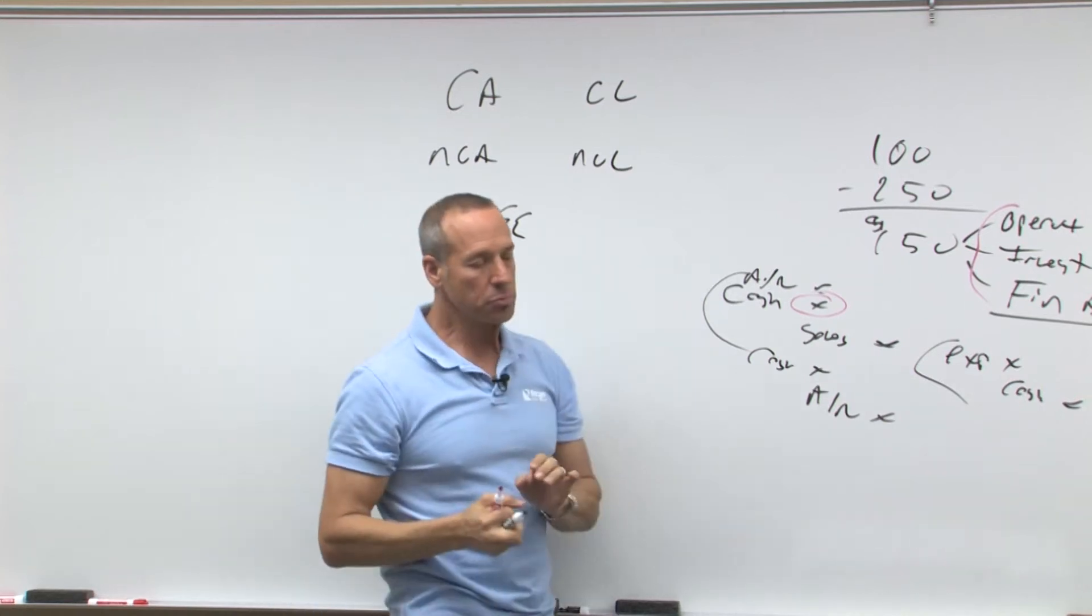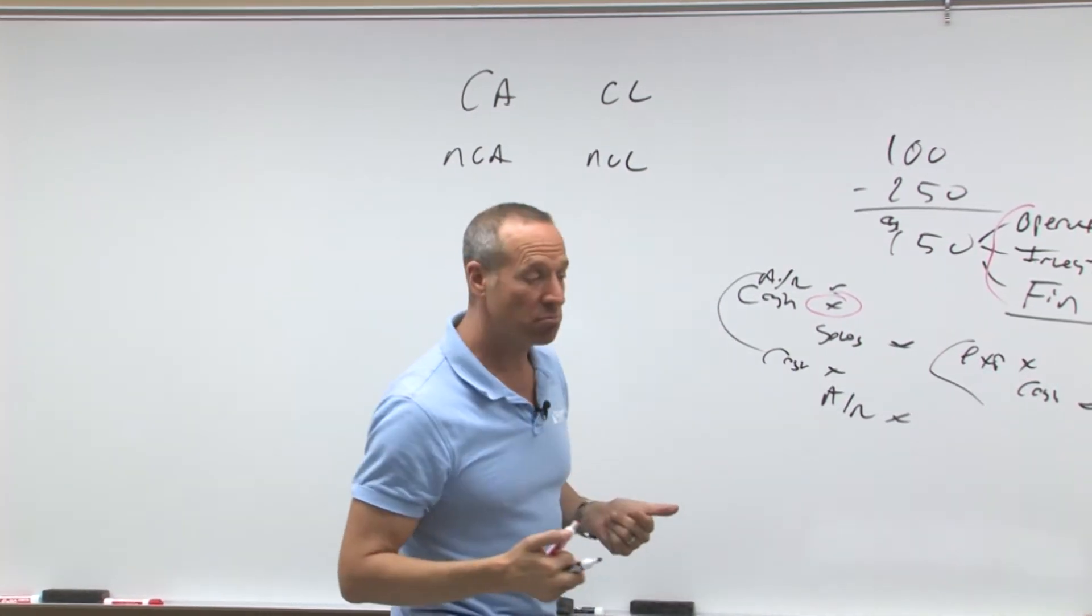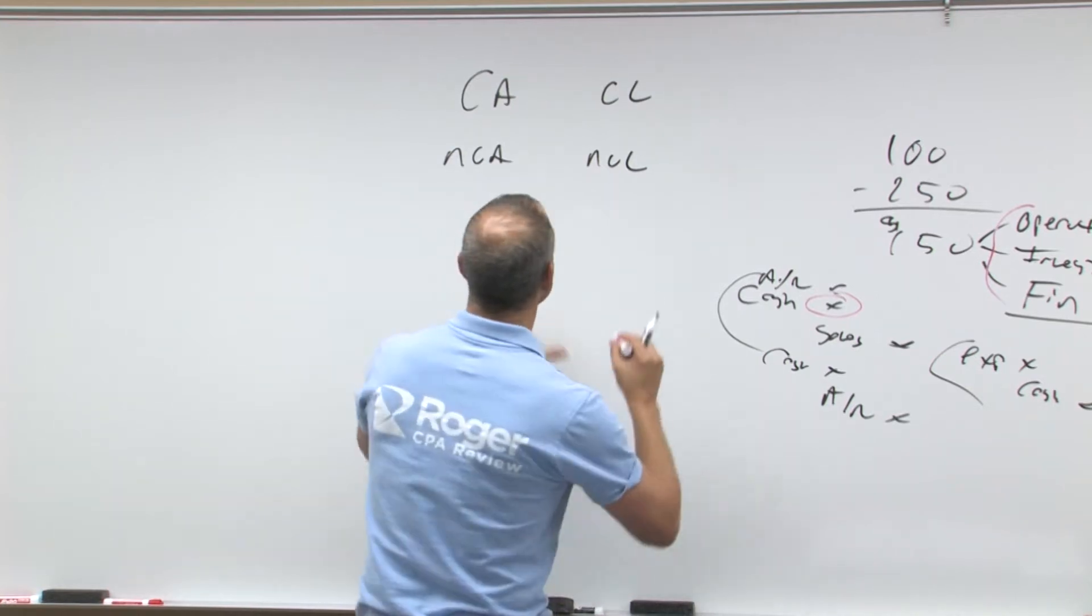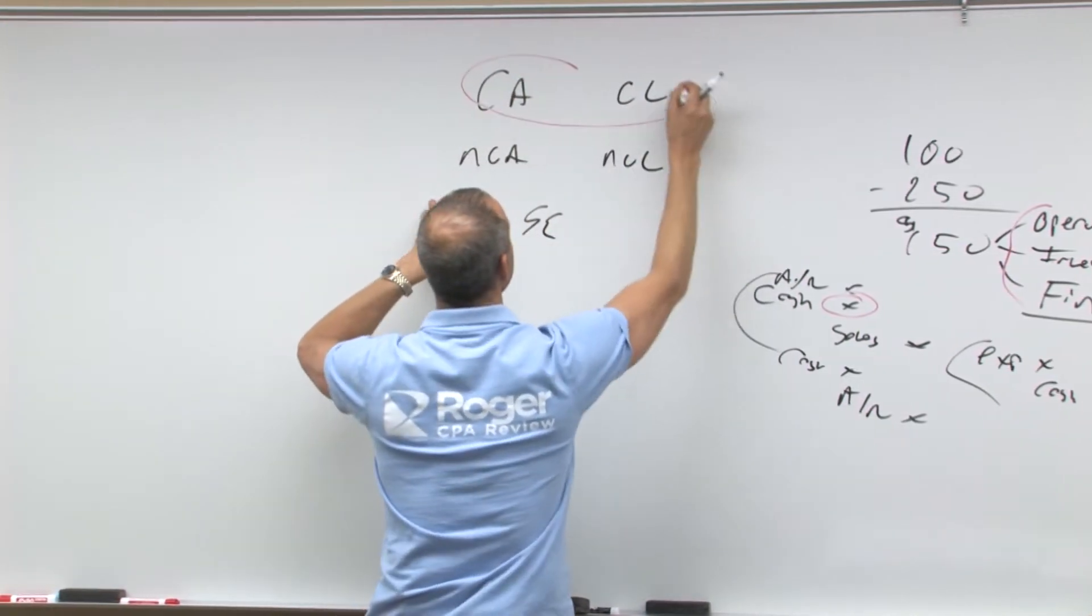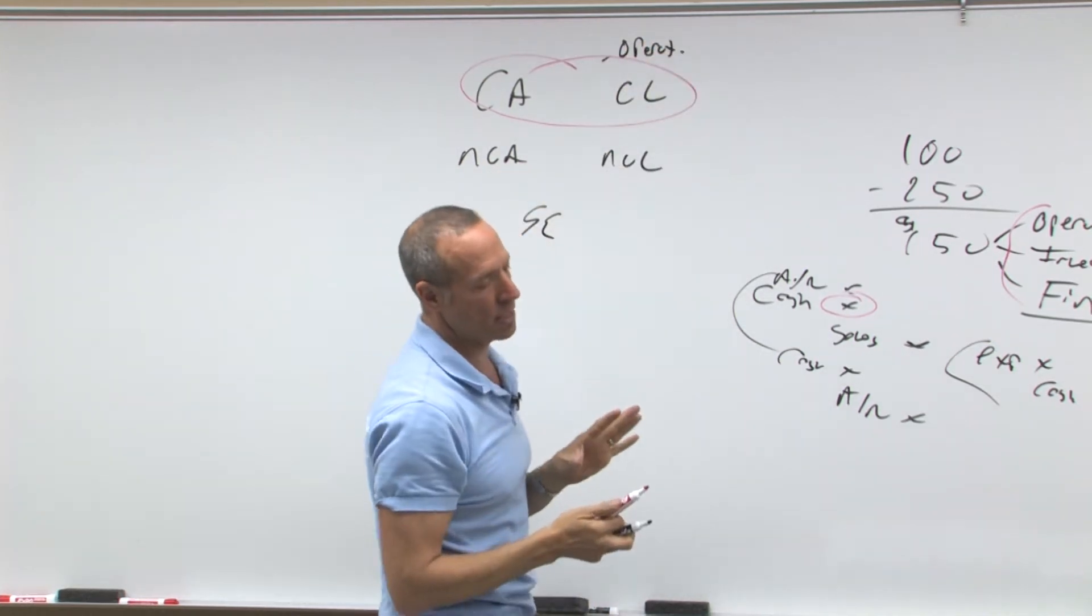It's an eye chart, right? No. It is a balance sheet, but what do you see? So generally, if it is a current asset or current liability, it is operating, generally speaking.